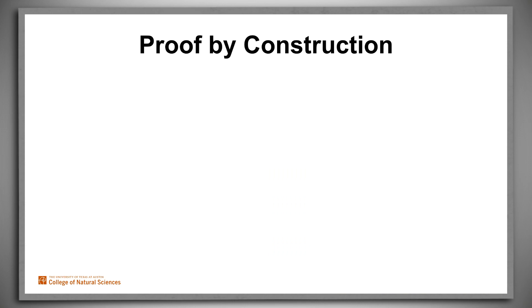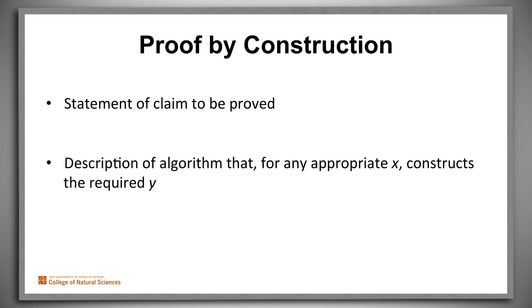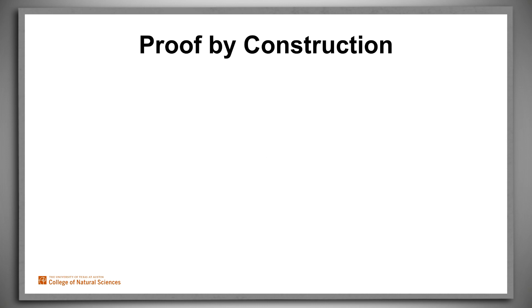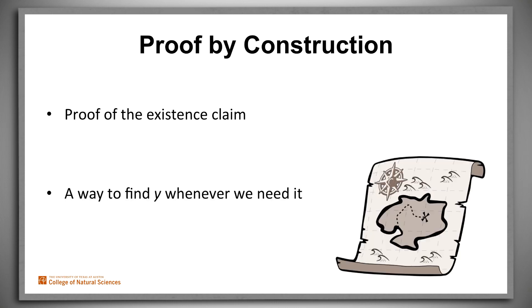Such proofs have a simple structure. We first clearly state the claim that we want to prove. Then we describe an algorithm that, given any element of the input set, constructs the required related object. And finally we have to prove that the algorithm is correct. In other words, that it actually does what we say it will do. The power of a proof by construction is that it not only proves the required claim, it also, as a possibly practical matter, acts like a map that tells us how to find a related object whenever we need it. Let's look at some examples.